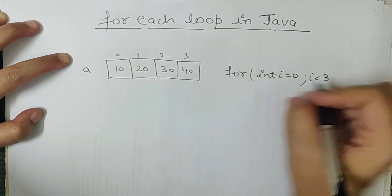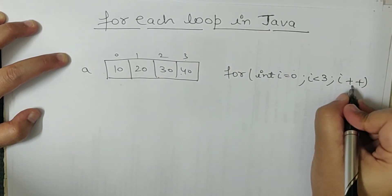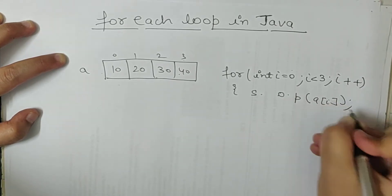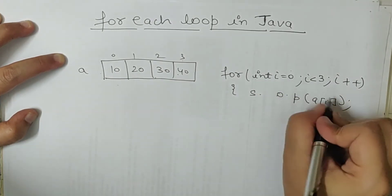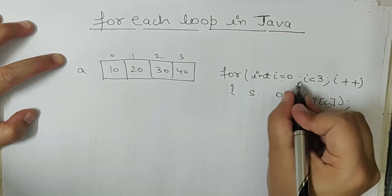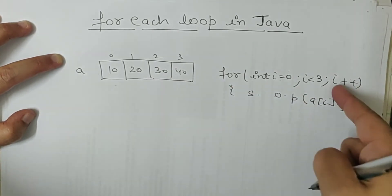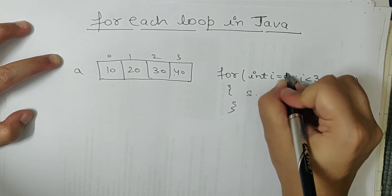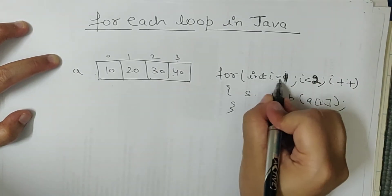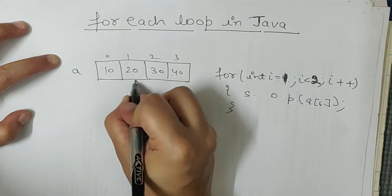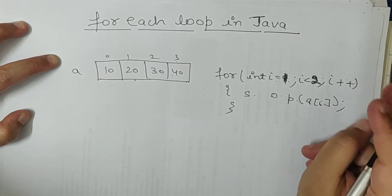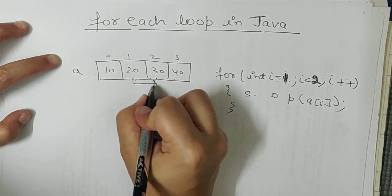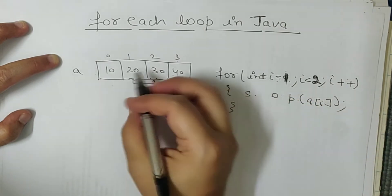Phil haal mein i++ likh ke pura chala deti hoon. Agar mein system.out.println a[i] likhun to kya hoga — sabse pehle a[0] print hoga, then i++ hoga, a[1] print hoga, a[2], a[3] print hoga, phir i ki value 4 hogi to loop se bahar. Agar mein i equal to one se leke i less than two likhun to sirf a[1] yani 20 print hoga, phir i ki value 2 hogi to i less than two satisfy nahi hogi, to sirf 20 aur 30 print hoga.